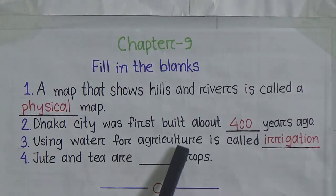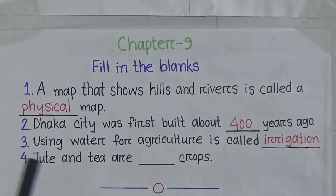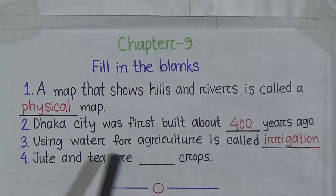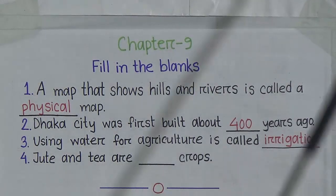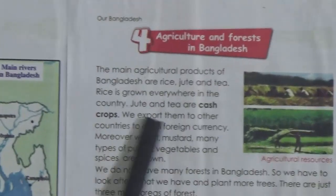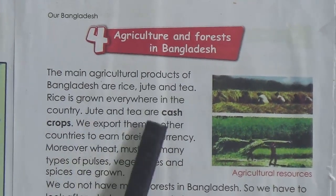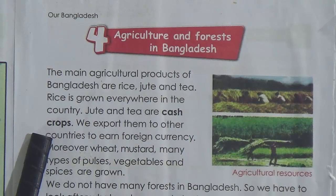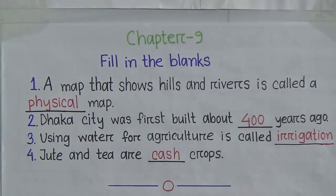Number 4: 'Jute and tea are ___ crops.' We find the answer from lesson 4, page number 56. Jute and tea are cash crops. So in the gap we have to write 'cash' — C-A-S-H. Jute and tea are cash crops.